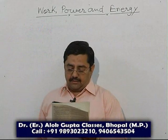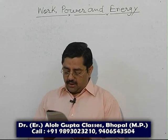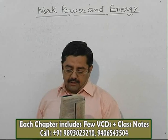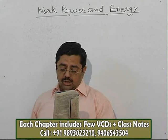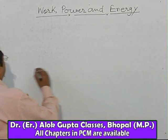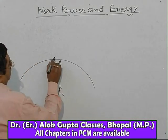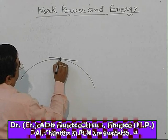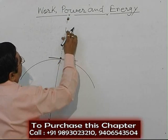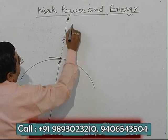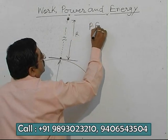Question 13: If g is the acceleration due to gravity on the earth's surface, what is the gain in potential energy of an object of mass m raised from the surface of the earth to a height equal to the radius of the earth? Earth ki radius r hai. Iske surface se ek mass ko oopar ki taraf leke jate hai, aur height is equal to radius of the earth.